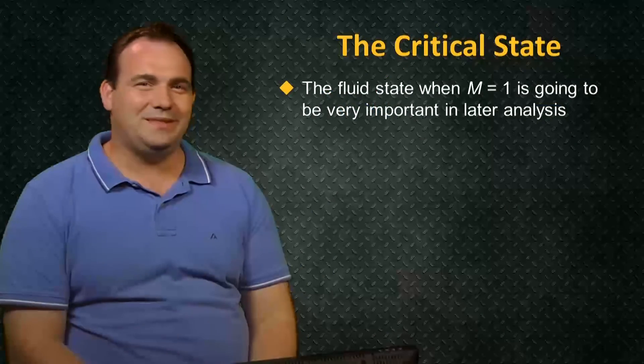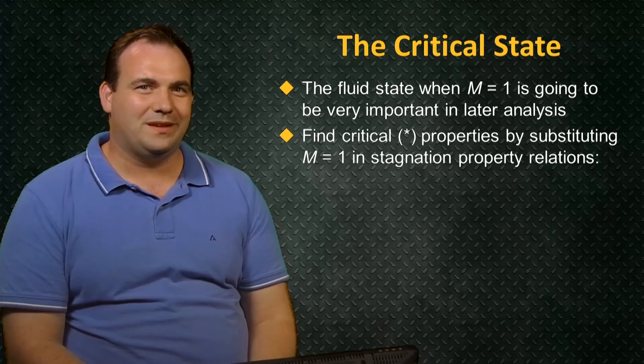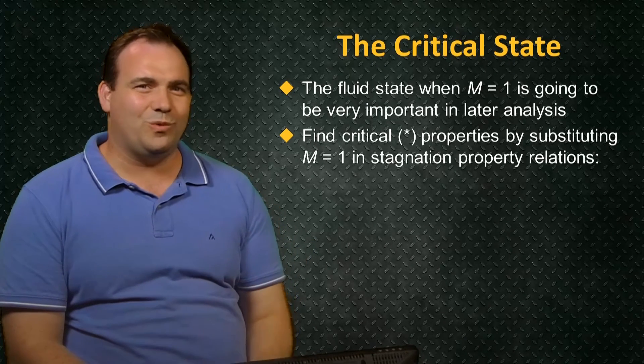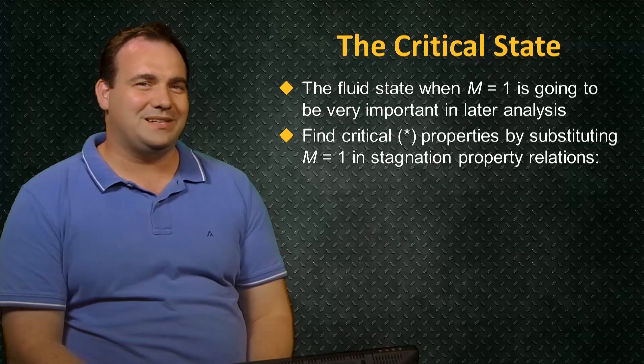The relations between the sonic state, which is denoted with a star, and the stagnation state can be found simply by substituting a Mach number of 1 in our relations for the stagnation properties.